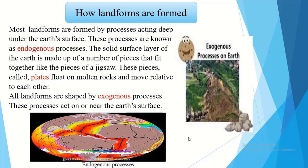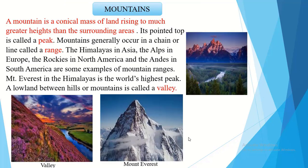All landforms are also shaped by exogenous processes. Exogenous is an external process — this happens outside the surface of the earth. For example, heat and cold make rocks crack and break, as do some actions of plants, animals and people. Wind, water and moving ice break up rocks too. They also carry away the broken pieces and deposit them elsewhere. Due to these exogenous and endogenous processes, there can be formation of new landforms on the surface of the earth.